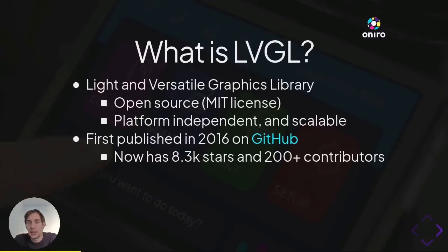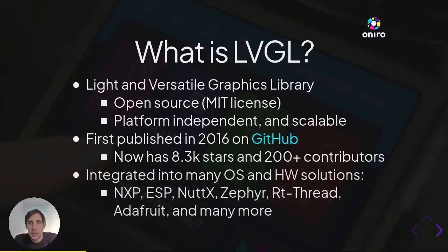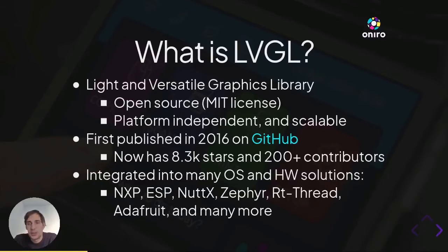LVGL is frequently among the most popular C repositories on GitHub and was adopted by many large and popular projects. We have a good relationship with vendors like NXP, Espressif, and Arduino, and RTOS projects like Mbed, Zephyr, RT-Thread, and recently Oniro. About two years ago, we created LVGL LLC in order to provide a solid background for the library and to offer services for our customers.